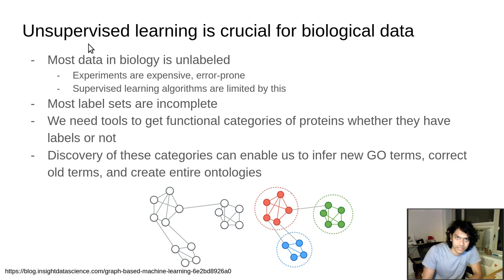The first thing I want to get across here is that unsupervised learning is crucial for biological data. The reason for this is that most data in biology is unlabeled, the experiments are expensive and error-prone, and most of our current efforts are in supervised learning algorithms. For function prediction, we are limited by the annotations that are currently available. Not only that, we're also restricted by the fact that the label sets themselves are incomplete. We don't know all the possible functions that are out there for proteins.